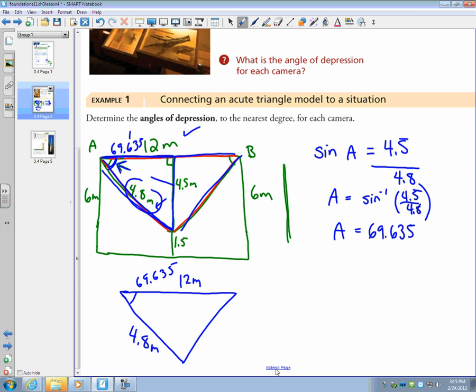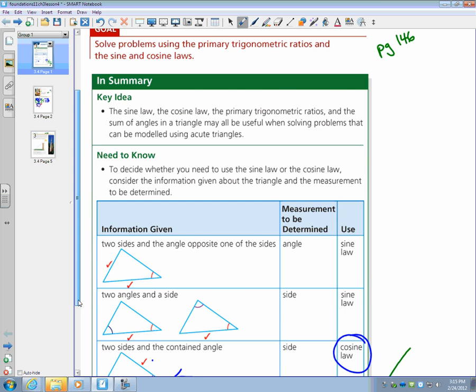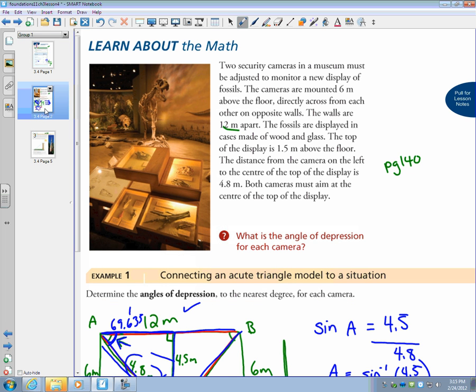Let me look at this triangle. I know that this is 4.8. I know that this is 69.635. And I know that this is 12 meters. In order to use the cosine law for myself, I always need to put my letters in. So if this is A, this is side A. If this is B, this is side B. And this would be C. And that's side C. So what I really want is angle B. So what will help me solve for angle B of the cosine law?